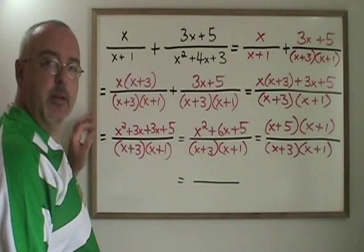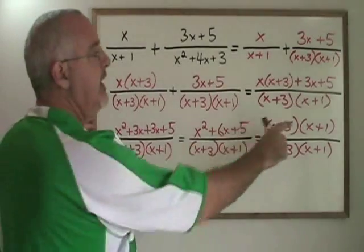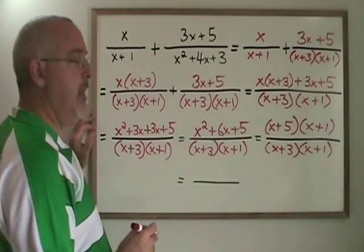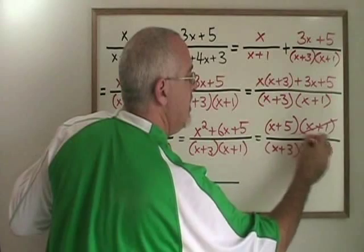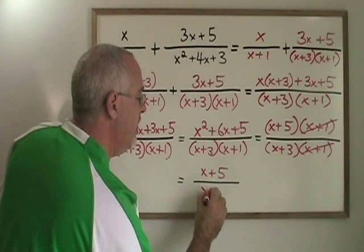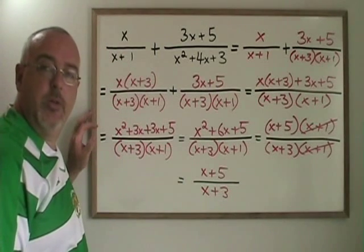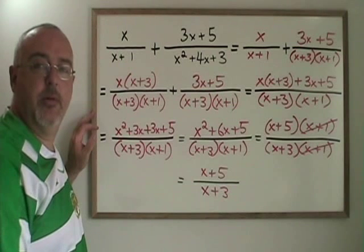I look for a canceling opportunity. This fraction can be simplified because x plus one appears in both the numerator and the denominator. So I cancel the x plus ones. My final answer will be x plus five over x plus three. This example shows how to add two algebraic fractions.